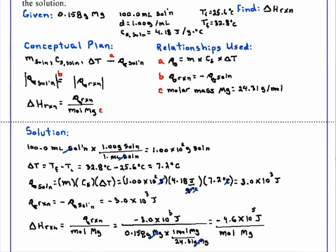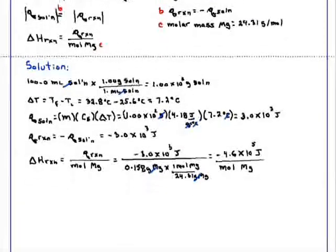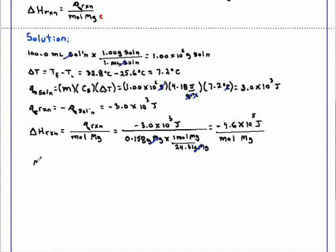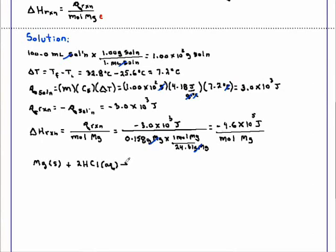Now, if we look at the balanced equation, we see that the stoichiometric coefficient in front of magnesium is 1. So the value we have calculated for the enthalpy of reaction per mole of magnesium is the same as the value for the reaction as written.